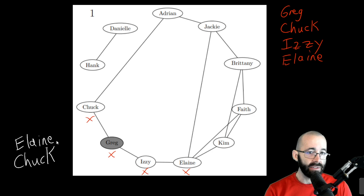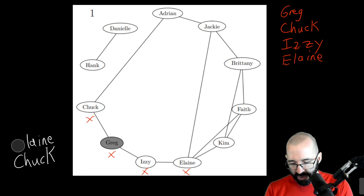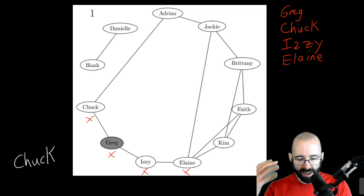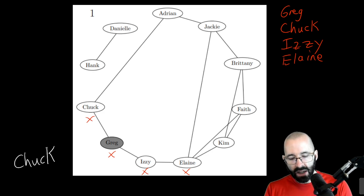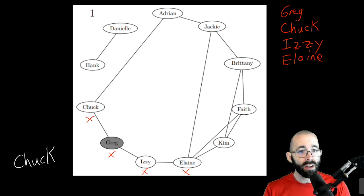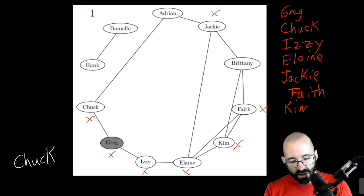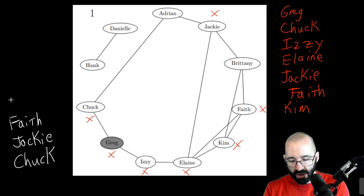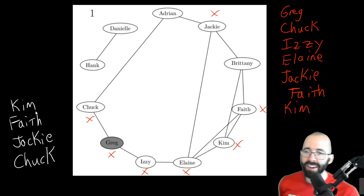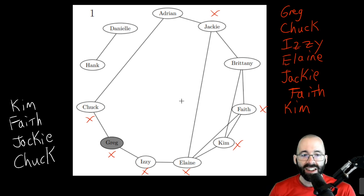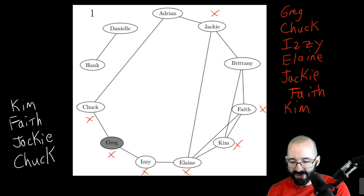I recommend pausing the video and trying to finish this on your own. So we pop Elaine off the node, do whatever we need to do analyzing Elaine, and then we mark and push all adjacent nodes — here we're marking and pushing three nodes: Jackie, Faith, and Kim. Those are all the unmarked adjacent nodes. Sorry Chuck — you've got a lot of people in front of you. Because this is not a line anymore, it's a stack, and Chuck is the recipient of a dog pile.